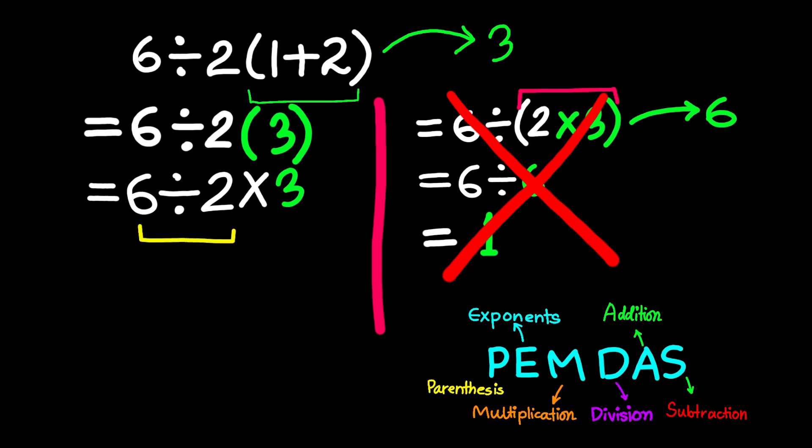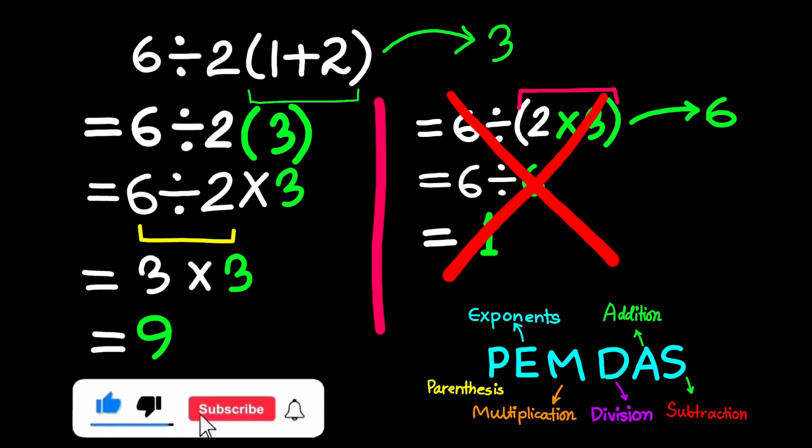First, 6 divided by 2 gives us 3, and then 3 times 3 gives us 9. So the correct answer is 9, not 1.